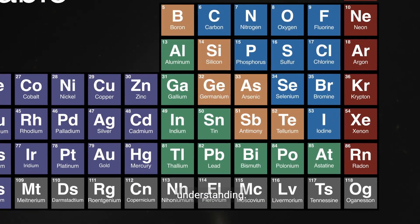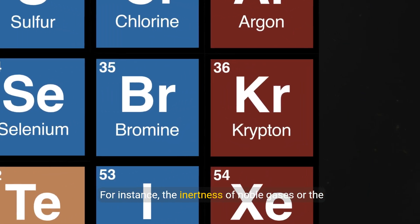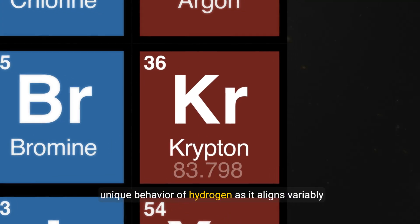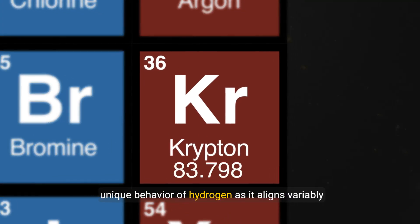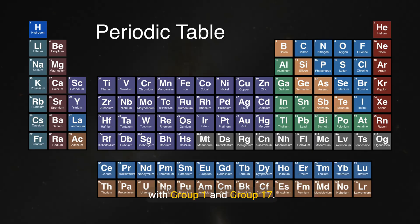Deviations from these trends enrich our understanding. For instance, the inertness of noble gases or the unique behavior of hydrogen as it aligns variably with group 1 and group 17.